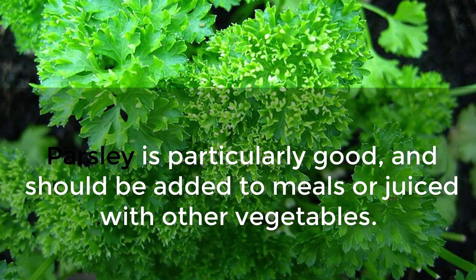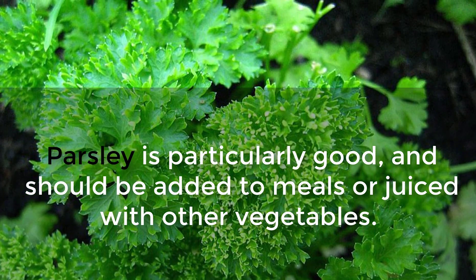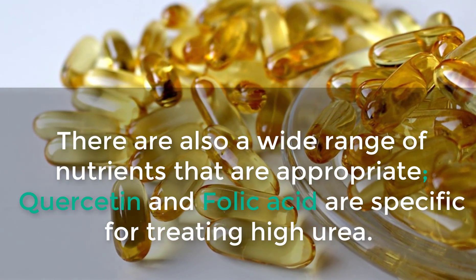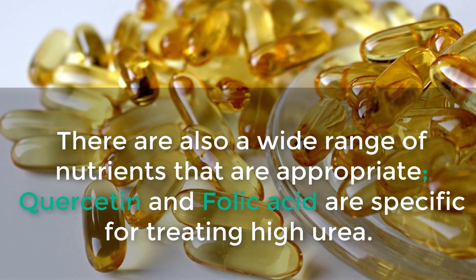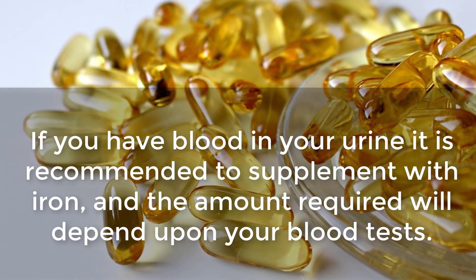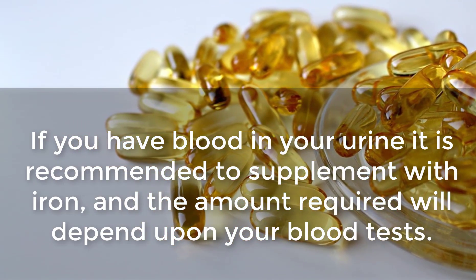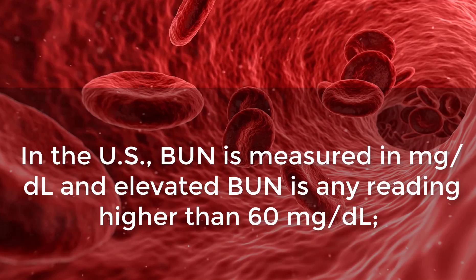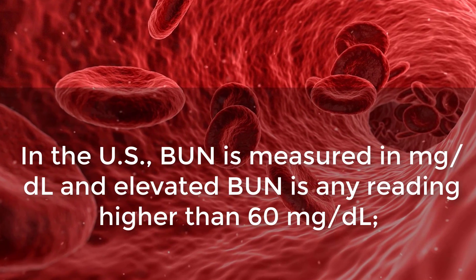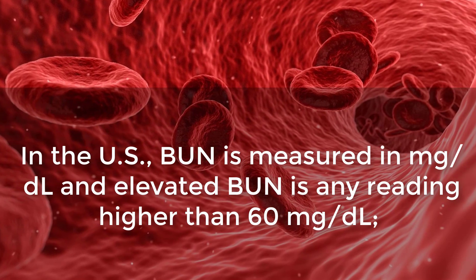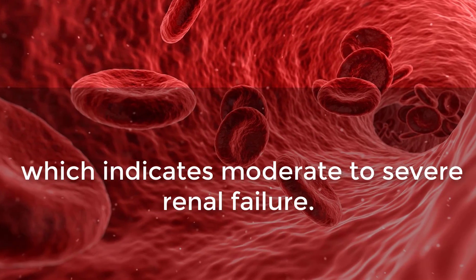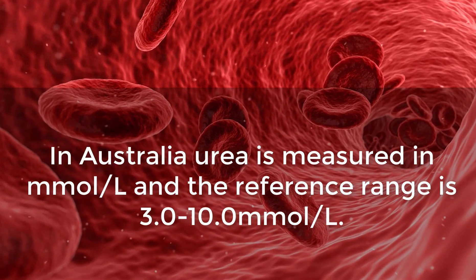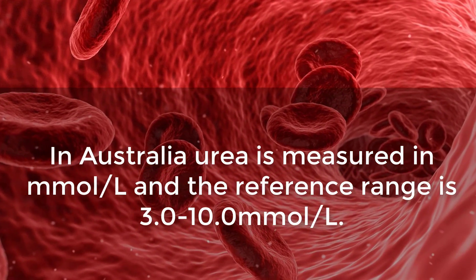There are many natural remedies that can assist in decreasing urea. Parsley is particularly good and should be added to meals or juiced with other vegetables. There are also a wide range of nutrients that are appropriate — quercetin and folic acid are specific for treating high urea. If you have blood in your urine, it is recommended to supplement with iron. The herbs terminalia arjuna, goldenseal, and marshmallow would all be suitable. In the US, BUN is measured in milligrams per deciliter, and elevated BUN is any reading higher than 60 mg/dL, indicating moderate to severe renal failure. In Australia, urea is measured in millimoles per liter, with a reference range of 3.0 to 10.0 mmol/L.